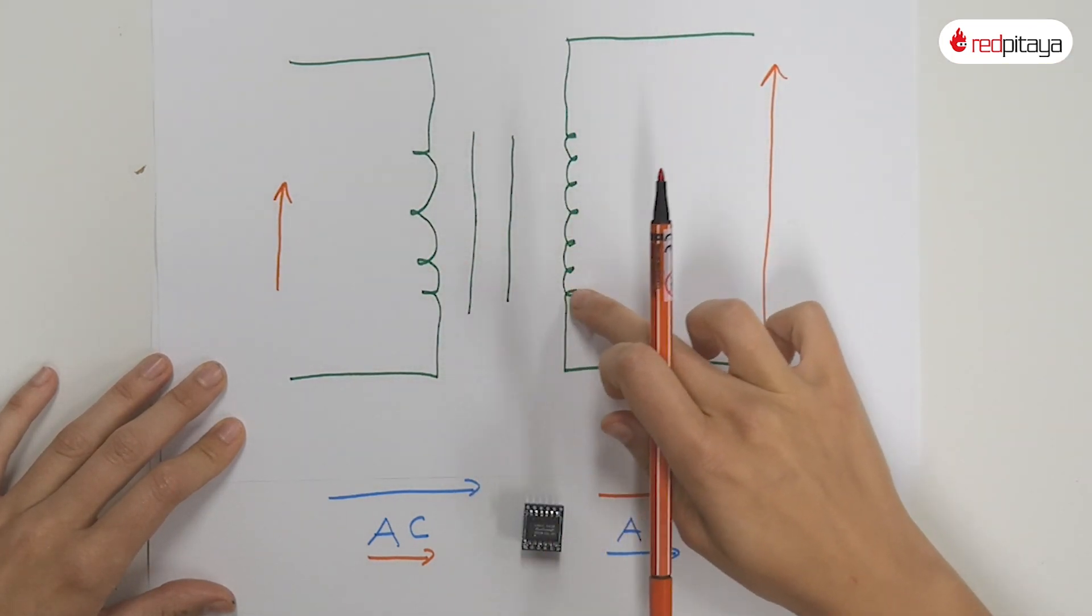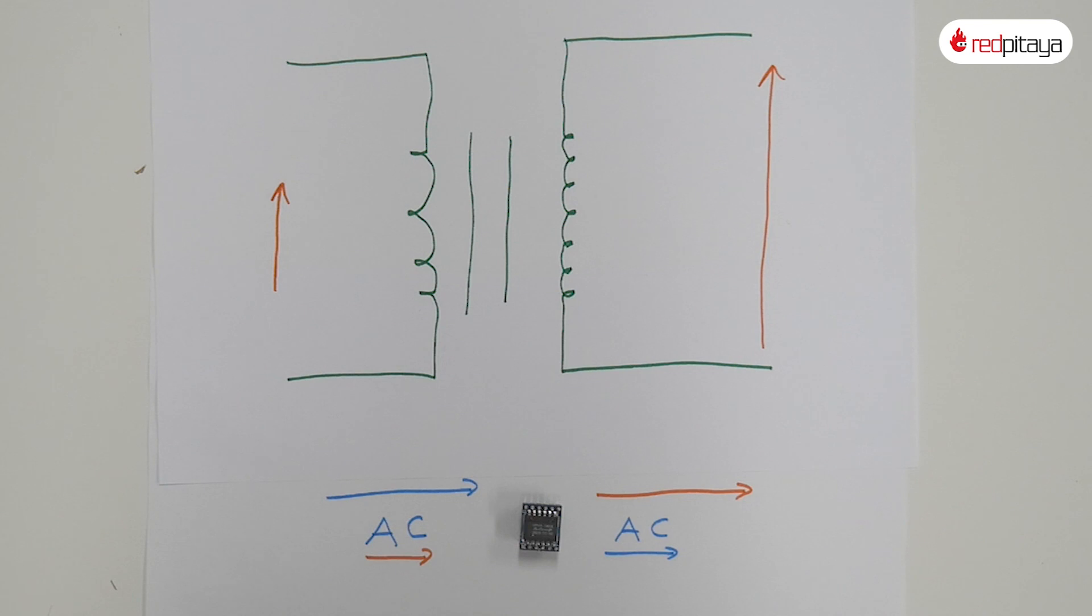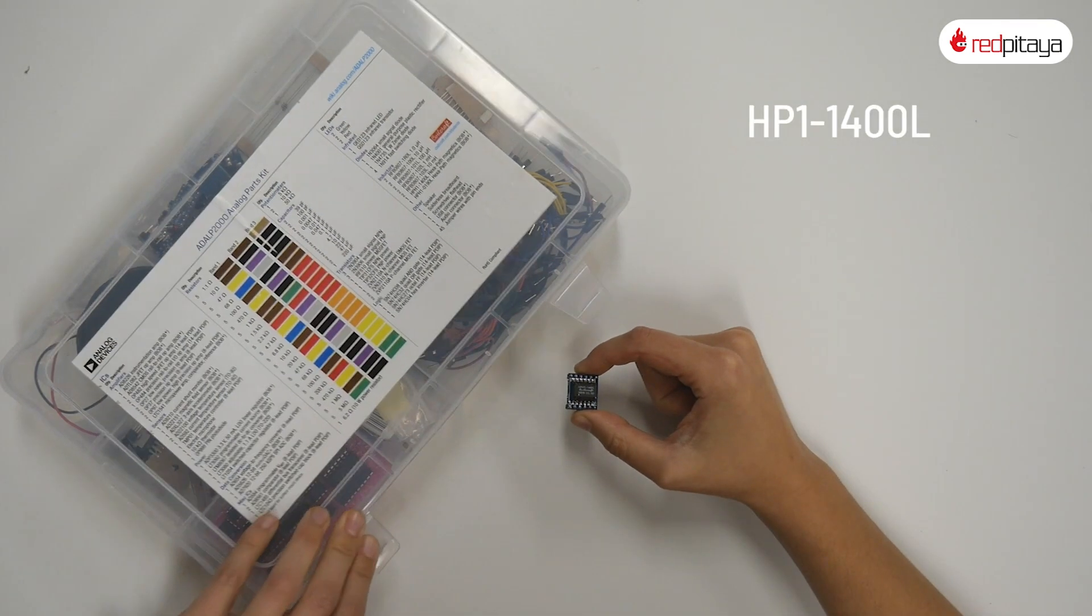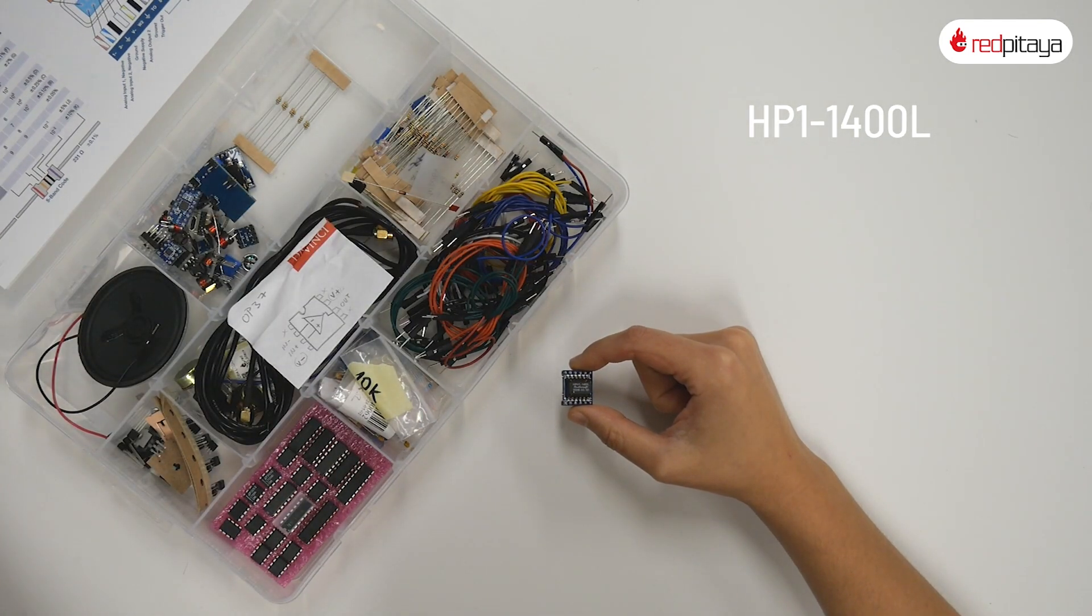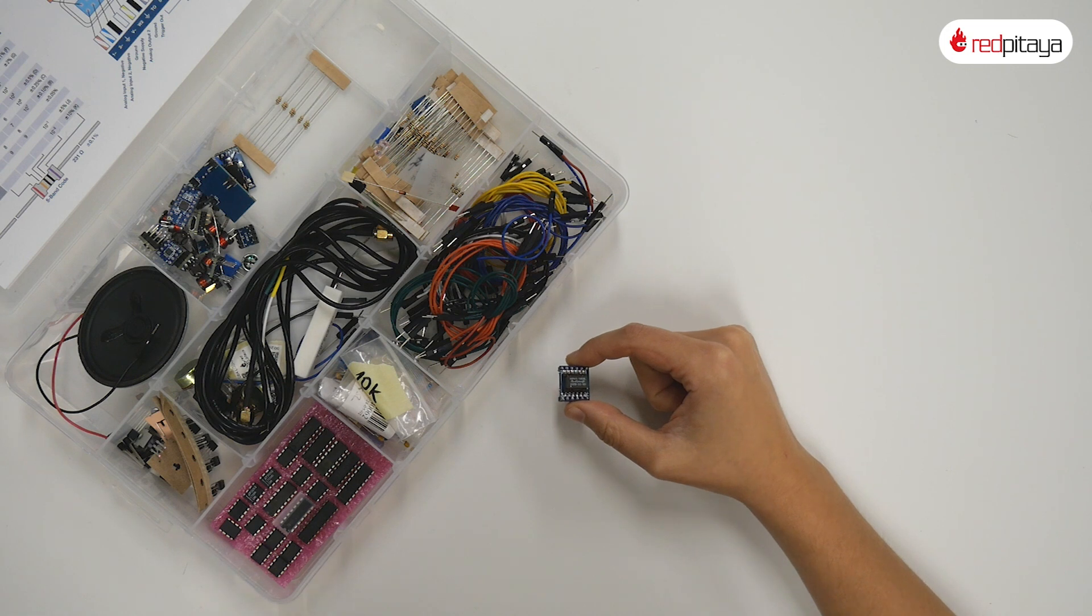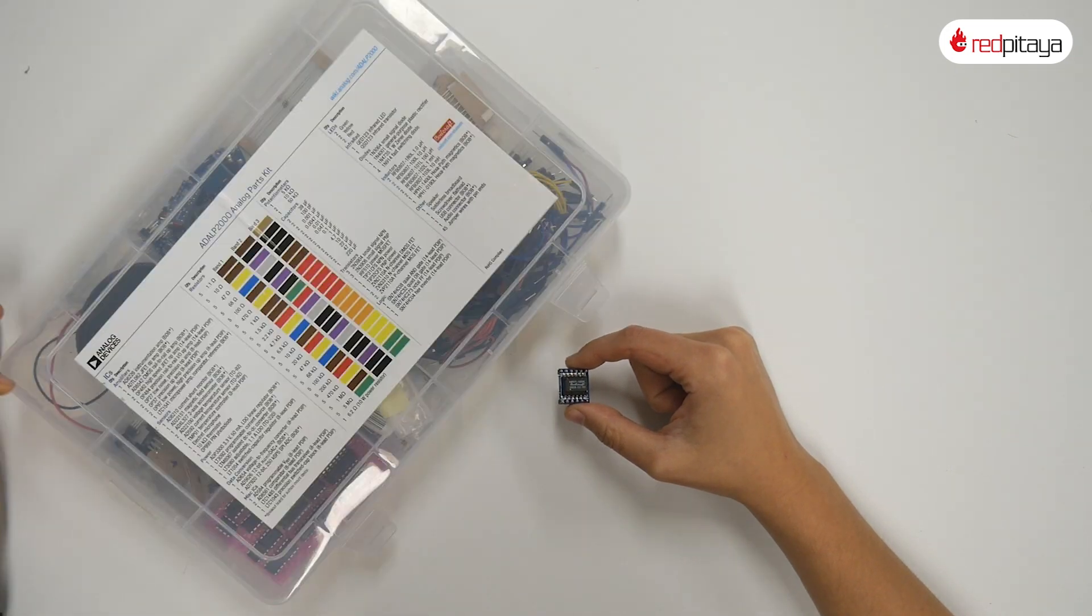This one right here is called HP1-1400L. You can find it in the Analog Devices kit - you know, the one we picked components for in this video series.